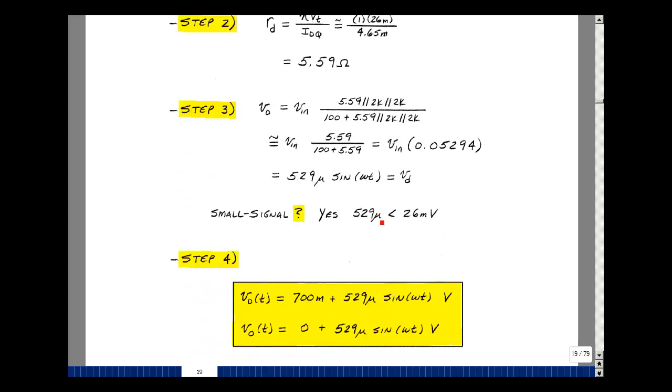Is that still small signal? Yes. 529 micro is the biggest this will ever be positive, and of course that's much less than 26 millivolts. You can add the DC and the AC results. So the voltage across the diode has a value of roughly 0.7 and then a sine wave riding on top of that. I'm going to put this in engineering notation. We're going to block that DC level and just get the AC part out.